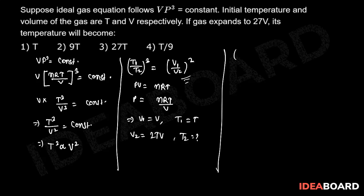We can write T by T₂ whole cube, that will be equal to V by 27V whole square. Or we can write T by T₂ will be equal to 1 by 27 to the power 2 by 3. We can write T₂ will be equal to 27 to the power 2 by 3 into T.